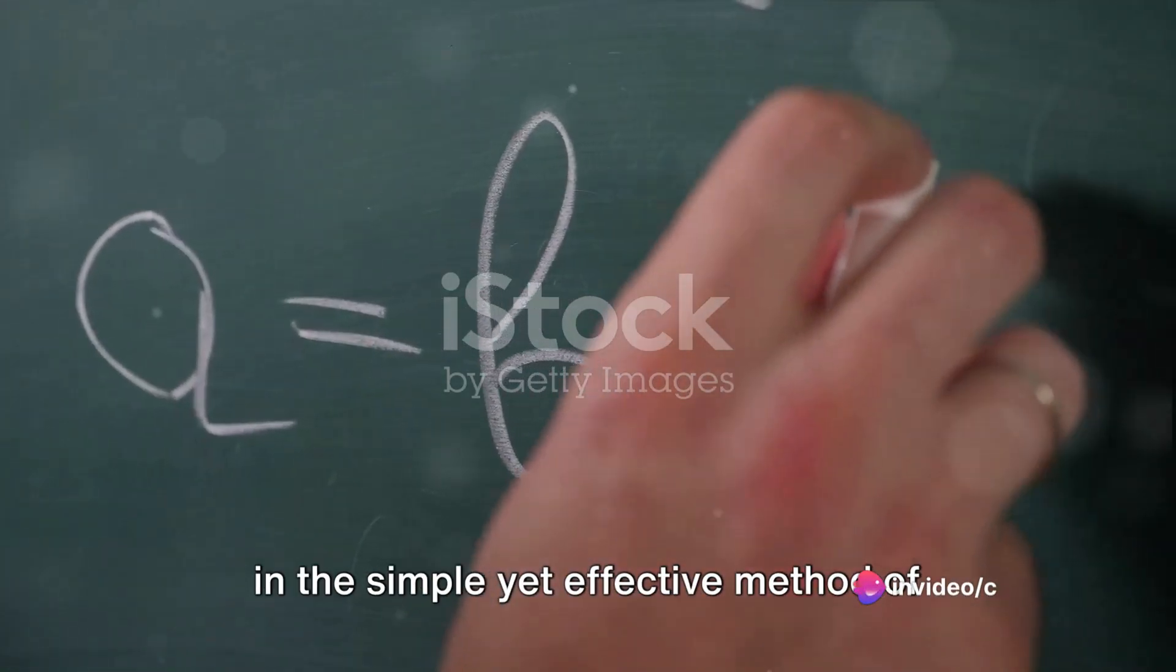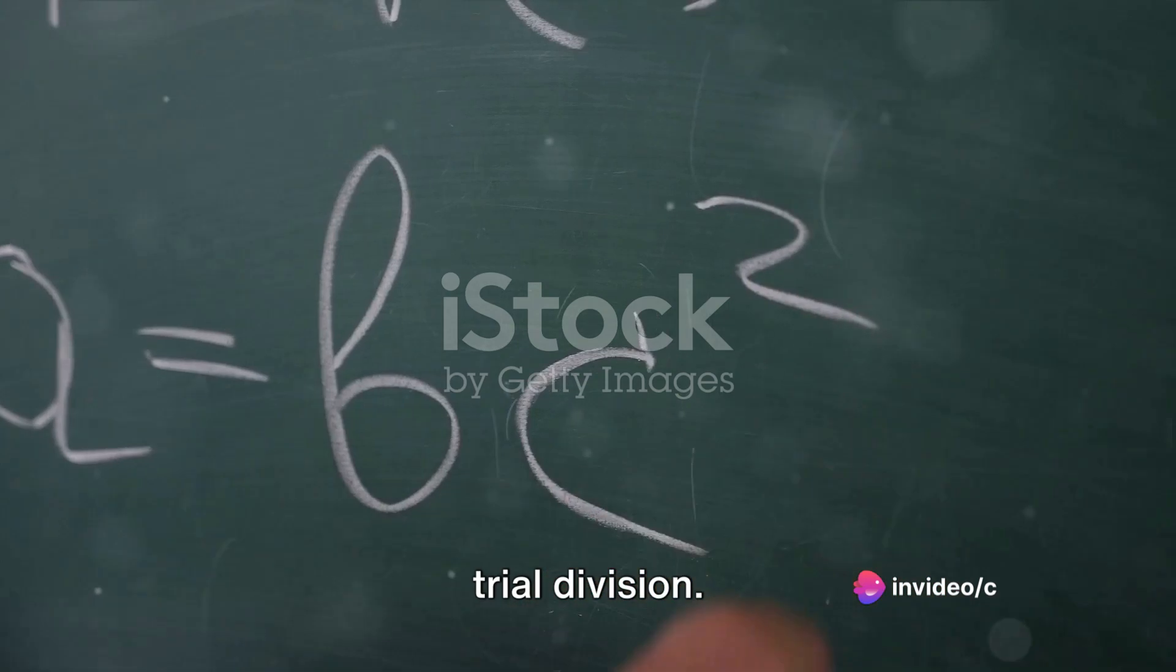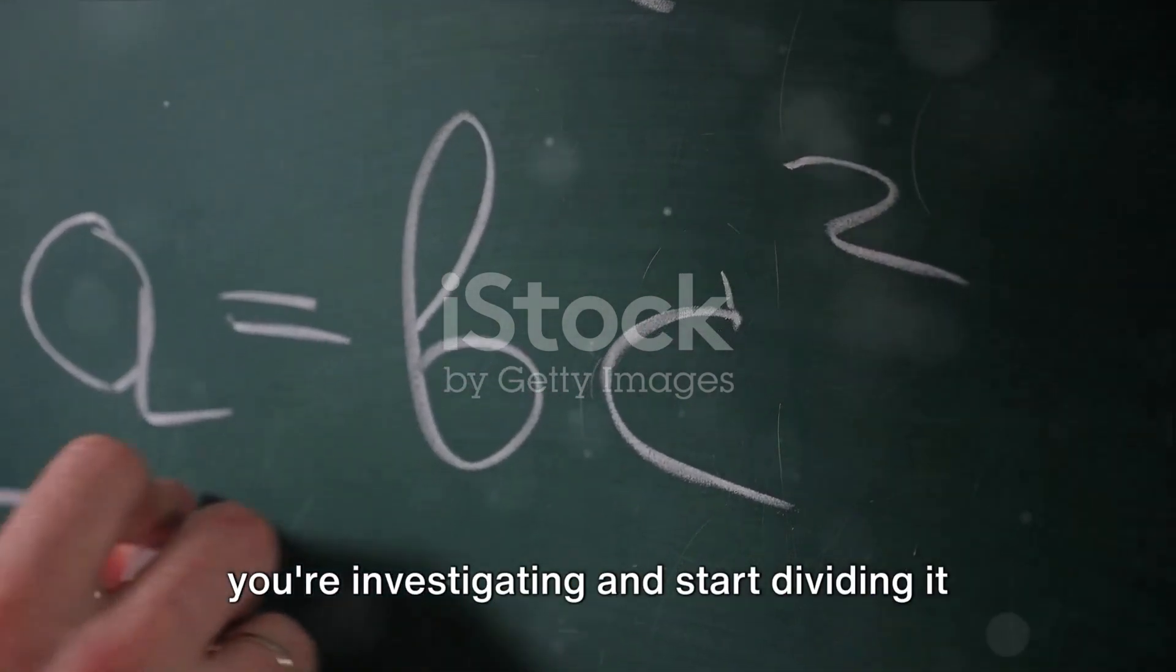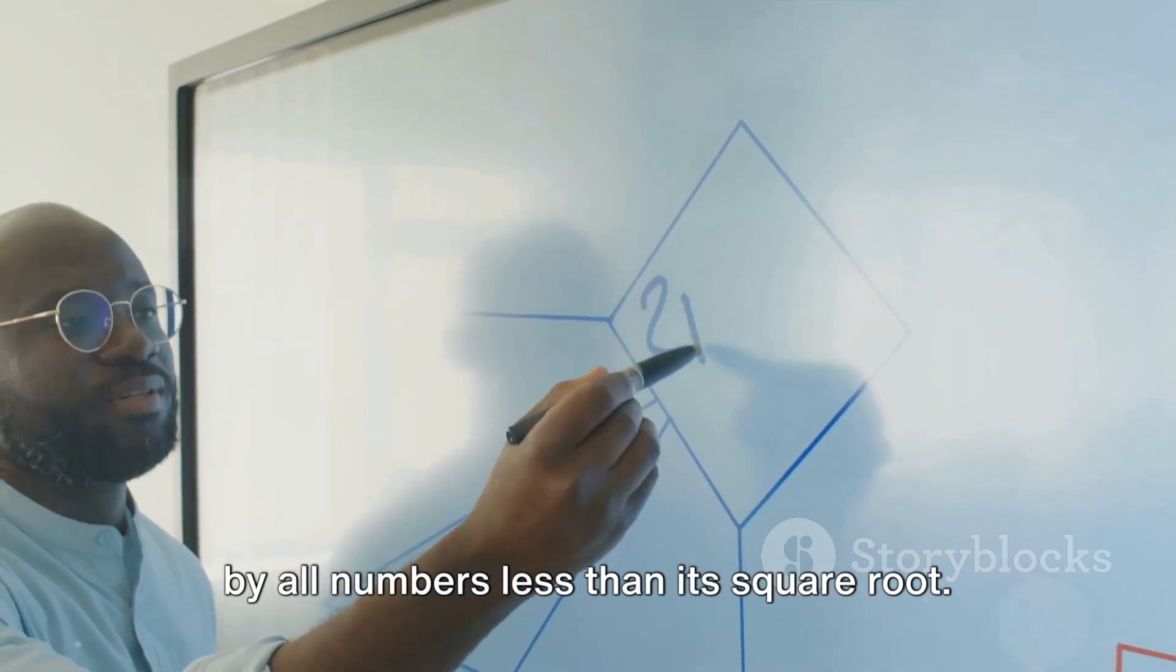The answer lies in the simple yet effective method of trial division. Here's how it works. You take the number you're investigating and start dividing it by all numbers less than its square root.